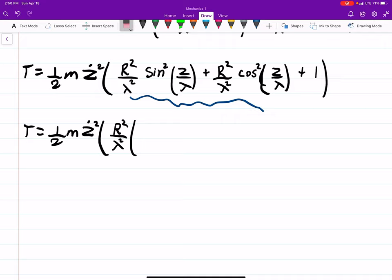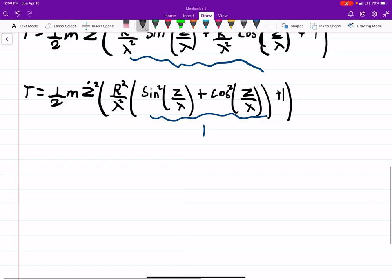So if I factor that out, I'll just have sine squared z over lambda plus cosine squared z over lambda, and then the plus 1. And this is Pythagorean's identity, and we know that's equal to just 1. So then the kinetic energy is one half m z dot squared times R squared over lambda squared plus 1.